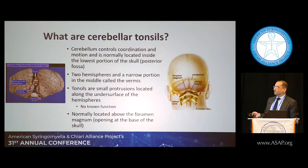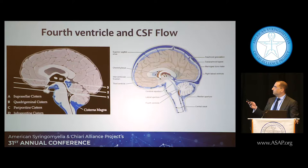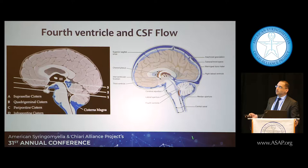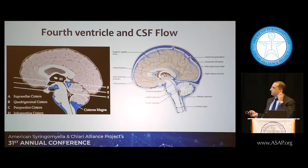The tonsils are located on the undersurface and can creep through the foramen magnum — the big opening at the base of the skull. Normally they're supposed to be above the foramen magnum. In Chiari, they come down. This is also where spinal fluid flows: the ventricles are in the center, and fluid circulates around and down into the spinal canal. The cisterna magna — the large basin — is a big fluid space behind the cerebellum.